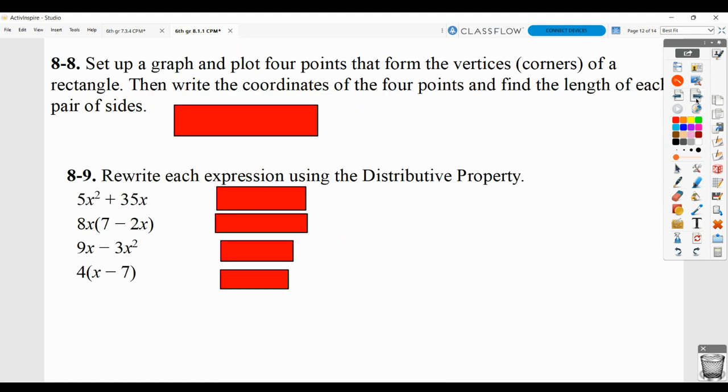Here, they want you to set up a graph and plot the four points that form the vertices, corners of the rectangle, write the coordinates of the points, and find the length of the pair of sides. What they're getting at here when they say answers vary is that it depends on what you chose. So don't put down an answer of answers vary. Instead, take graph paper, plot four points, write the coordinates of the points you plotted, find the lengths of the sides. Make sure you have the graph shown and the other information shown.